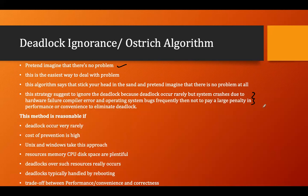These types of operating systems assume they will never go into deadlock, or that the scenario of getting into deadlock is very rare, so they do not use any algorithm for preventing, avoiding, detecting, or recovering from deadlock. This method is reasonable if deadlock occurrence is very rare. The second condition is that the cost of prevention is high — if the prevention technique is costly, we ignore it and don't use any prevention.